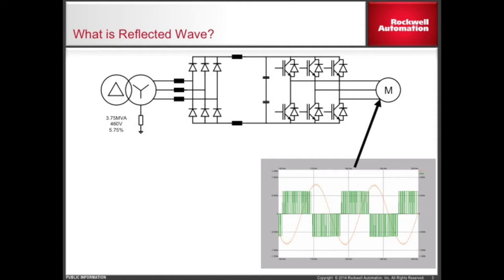The oscilloscope trace above shows two waveforms. The red waveform represents the AC current flowing to the motor. The green waveform represents the output voltage waveform coming out of the drive. This voltage waveform is made up of a series of voltage pulses. The duration of the pulse will vary depending on the speed the motor is being commanded to go.